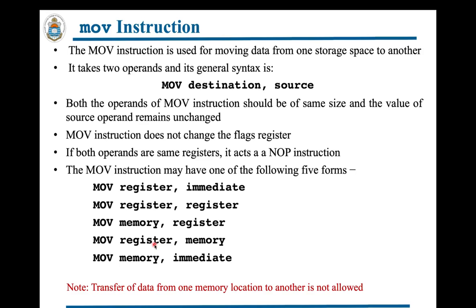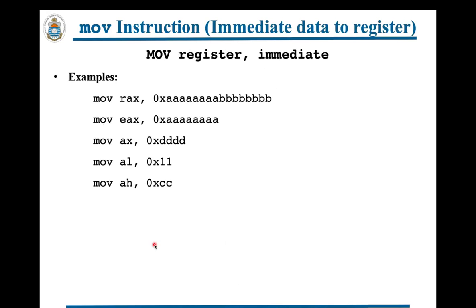This slide shows sample MOV instructions that move immediate data to a register — note the sizes of the destination and source operands are the same. When working in 64-bit mode, for 32-bit operands the 64-bit general purpose registers behave differently. For example, in the instruction MOV EAX, 0xAA — when these 4 bytes of data are moved to EAX, the upper 32 bits of RAX are zeroed out. Keep this in mind when using 32-bit operands in 64-bit mode.